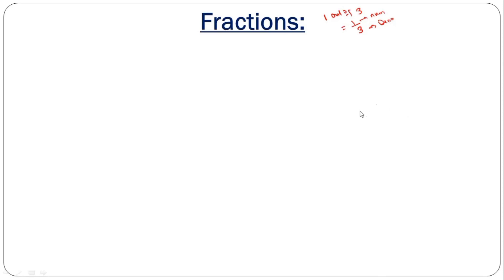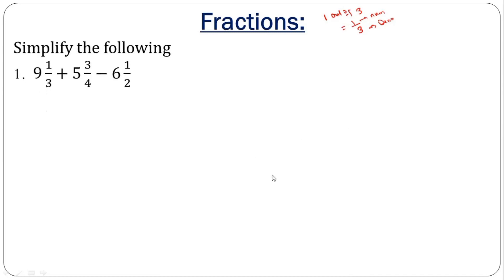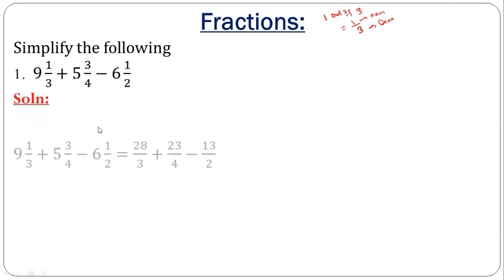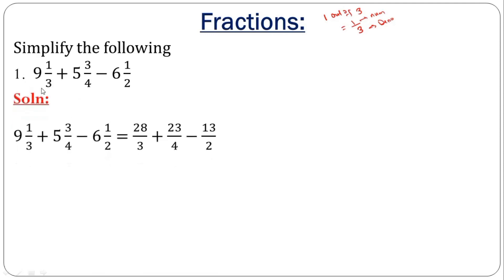We are going to look at the operations involved in fractions — addition, subtraction, multiplication, and division. Here we have a combination of addition and subtraction, and we need to simplify. We begin by turning mixed numbers into improper fractions. You use the denominator to multiply the whole number, then add the numerator, and divide by the denominator. So 4 times 5 is 20, plus 3 is 23 over 4, and this gives 13 over 2. After that, look for the LCM of the denominators, which is 12.